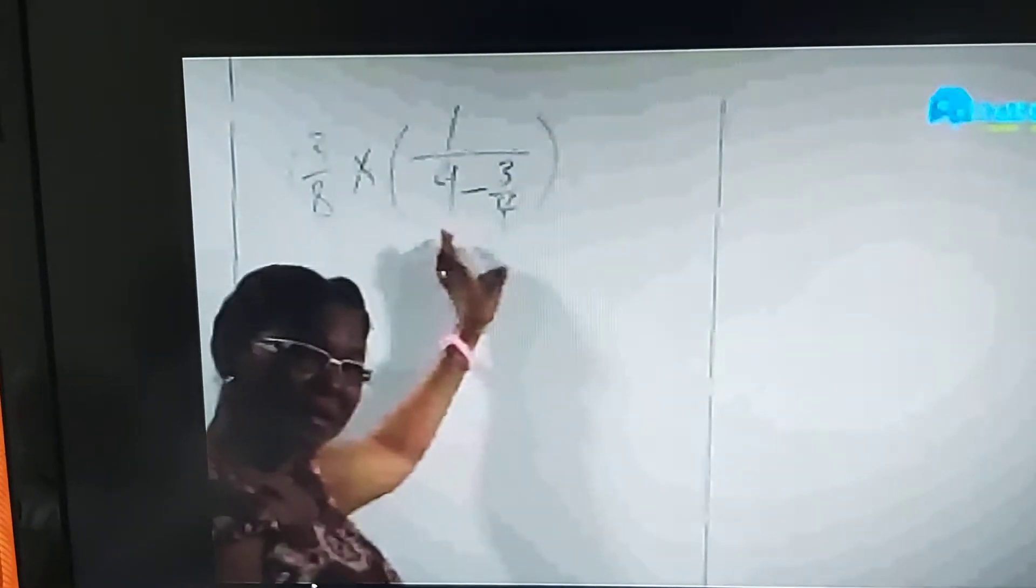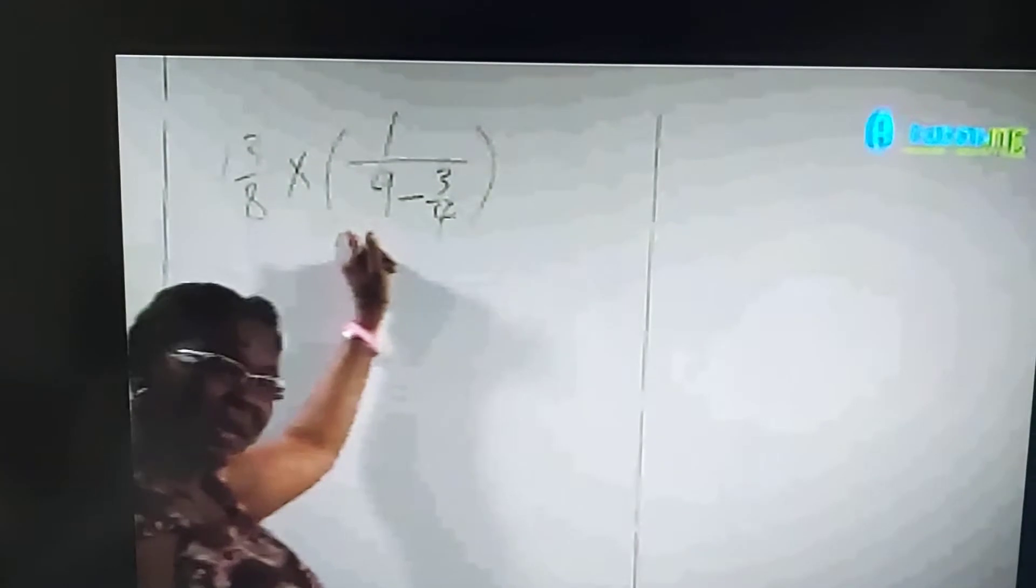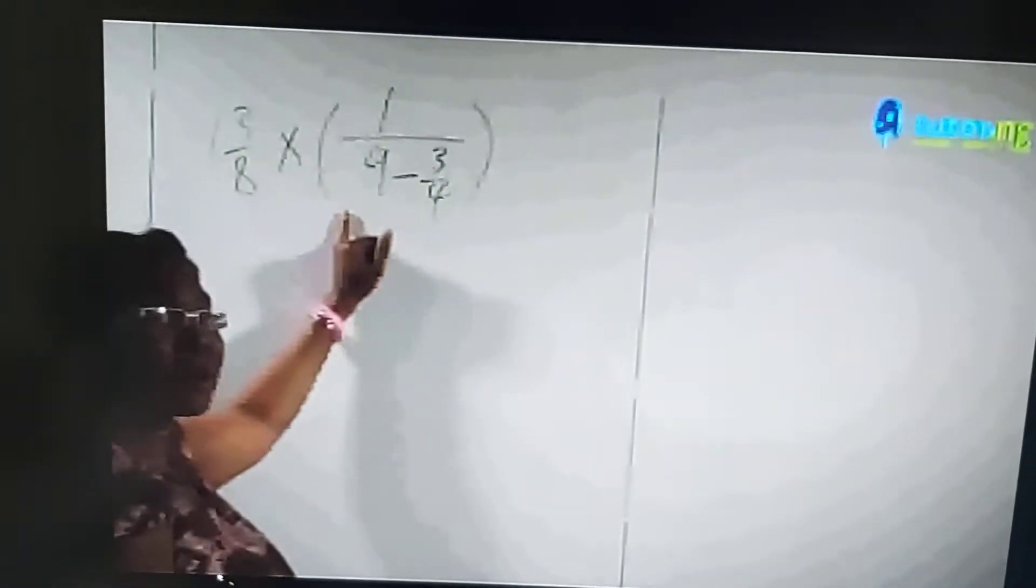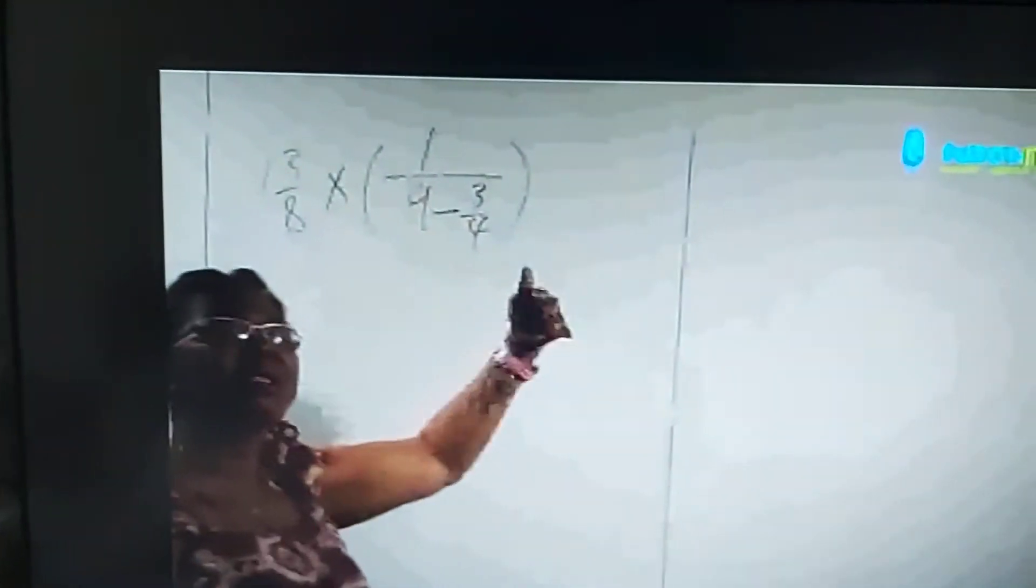Change to improper fractions and apply BODMAS. In other words, we've got brackets and division, because one over means reciprocal, which is one divided by.